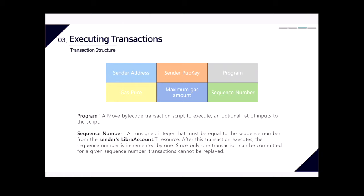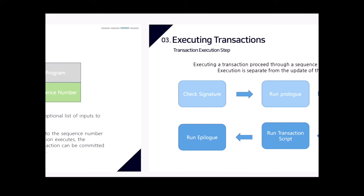A transaction consists of sender address, sender public key, program, gas price, maximum gas amount, and sequence number. The program is a Move bytecode transaction script with an optional list of inputs. The sequence number is an unsigned integer that must equal the sequence number from the sender's Libra account resource. After execution, the sequence number is incremented by one, and since only one transition can be committed per sequence number, transactions cannot be replayed — the sequence number plays an important role in preventing replay attacks.